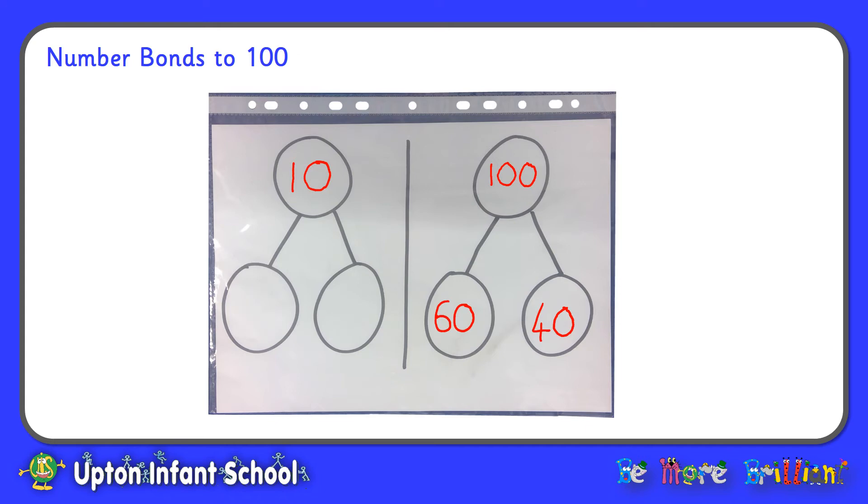Let's try one more. So number bonds to 10, I could have 10. What's going to go with 10 to make 10? Well, that's going to be 0. So 10 and 0 make 10. 10 and 0 are number bonds to 10. So that means that 100 and 0 are number bonds to 100.